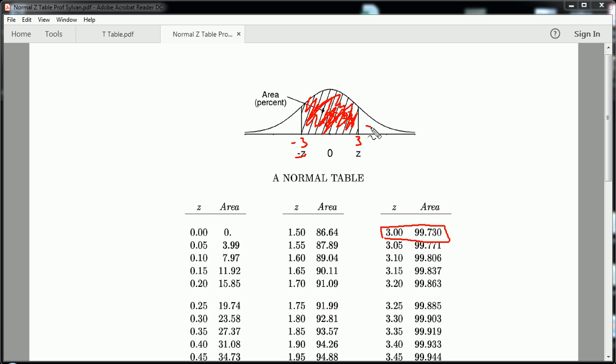Now, what if you wanted to know the probability of getting a Z value greater than 3? Well, the way you would do that is, first off, let's write it out. Probability of Z being greater than 3.